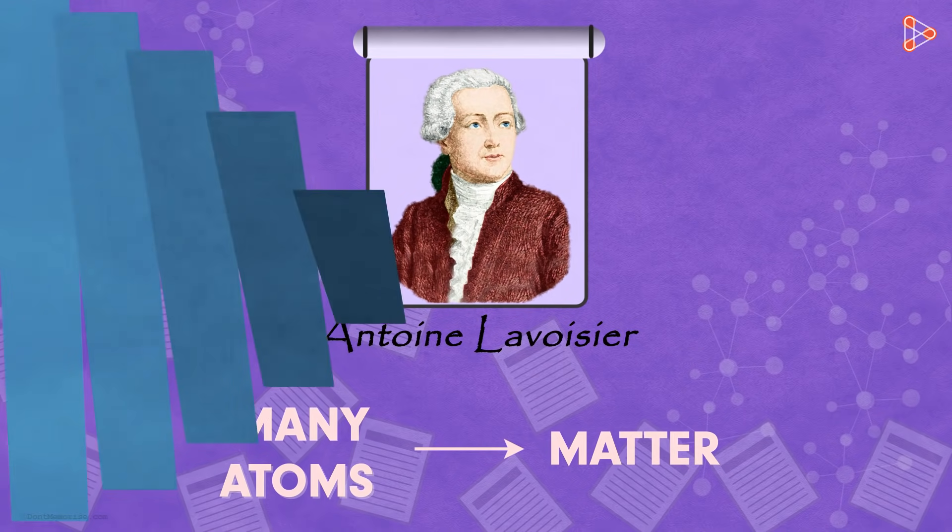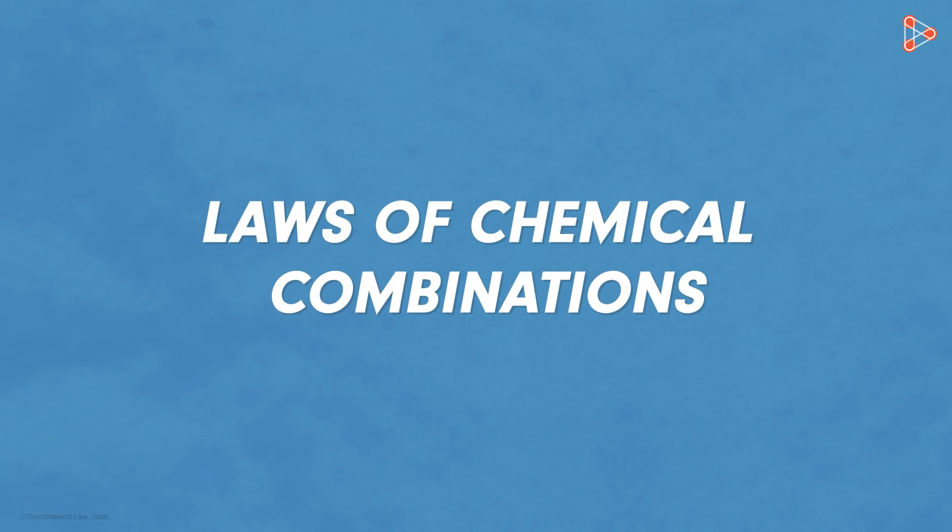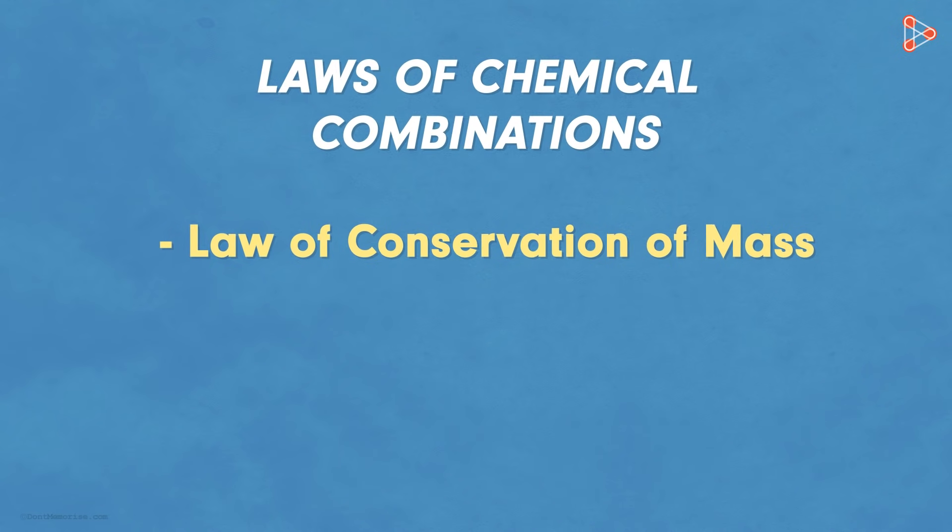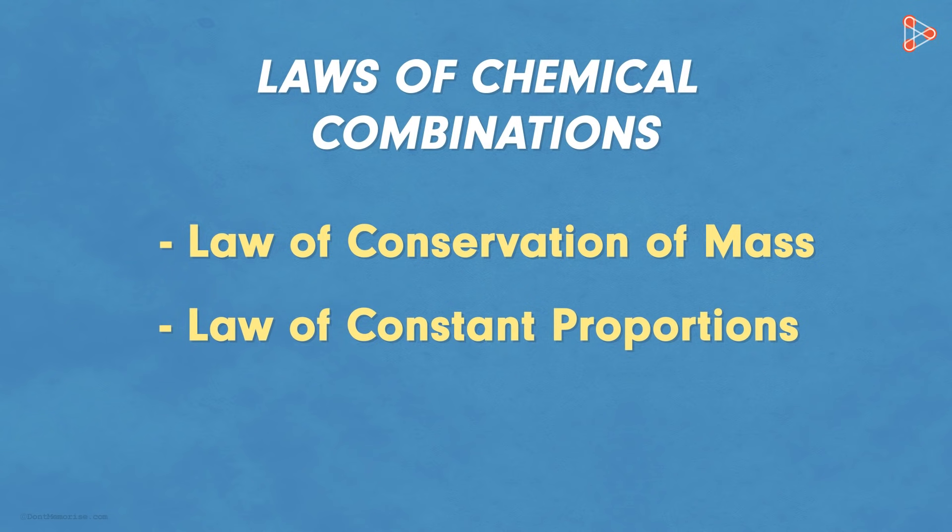After remarkable observations and ideologies, we could get the two major laws of chemical combinations. The two laws are Law of Conservation of Mass and Law of Constant Proportions. Let us understand each law in detail.